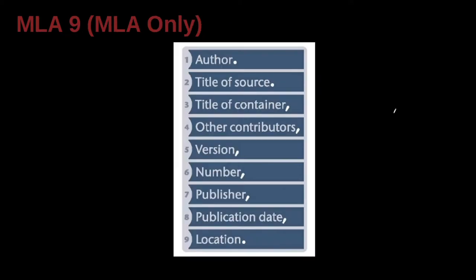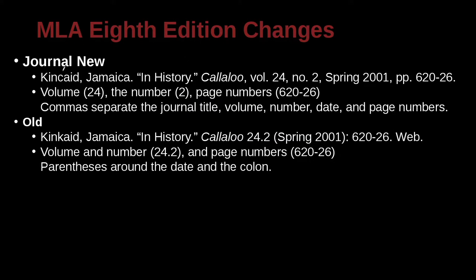Let's take a look at the journal reference changes inside the reference list. The new approach begins with the author's name, then the article title — which is the smaller piece inside something bigger. That bigger unit is the container, which in this case is the journal. Then we have volume abbreviated as vol. and number abbreviated as no., written out with commas. Then the date — Spring 2001 — followed by the page numbers. In this case, volume 24, number 2, pages 620 to 626.